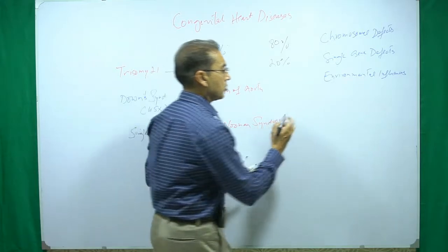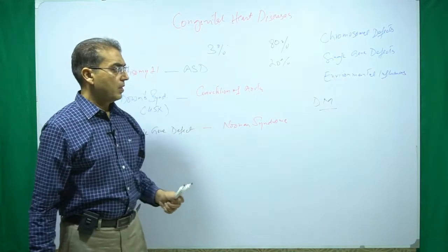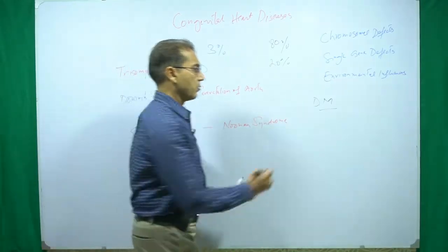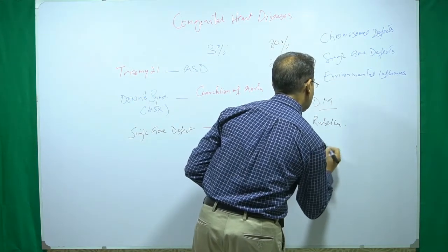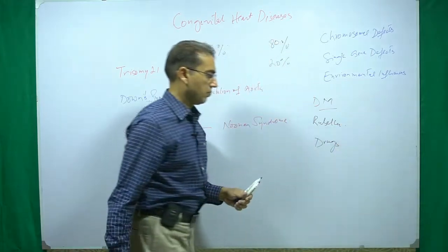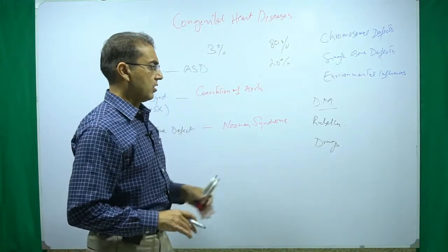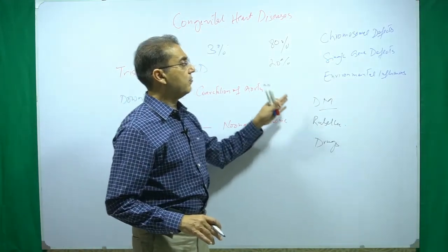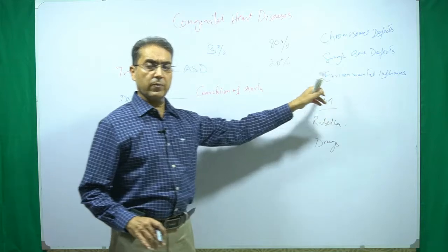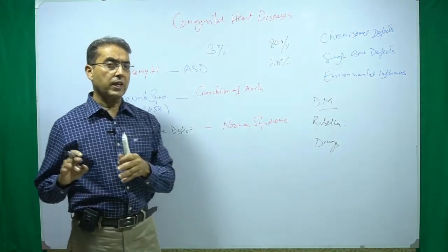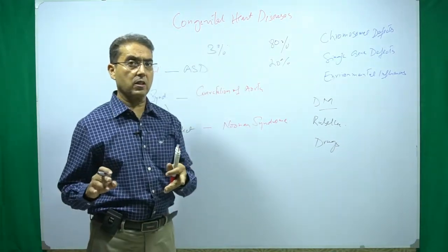One good example of an environmental influence is uncontrolled diabetes mellitus. Then there are certain infections, for example rubella, and some drugs like warfarin or SSRIs used during gestation may result in various types of congenital heart lesions. However, we have limited data to conclusively determine what effect environmental factors have on the development and type of congenital heart disease.